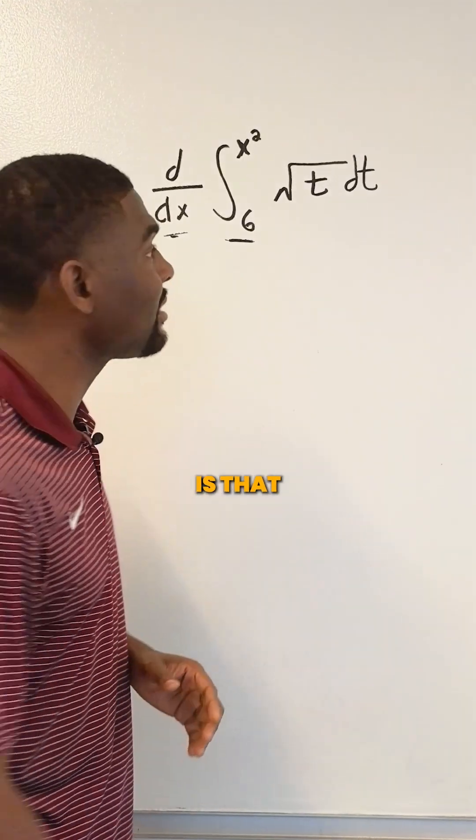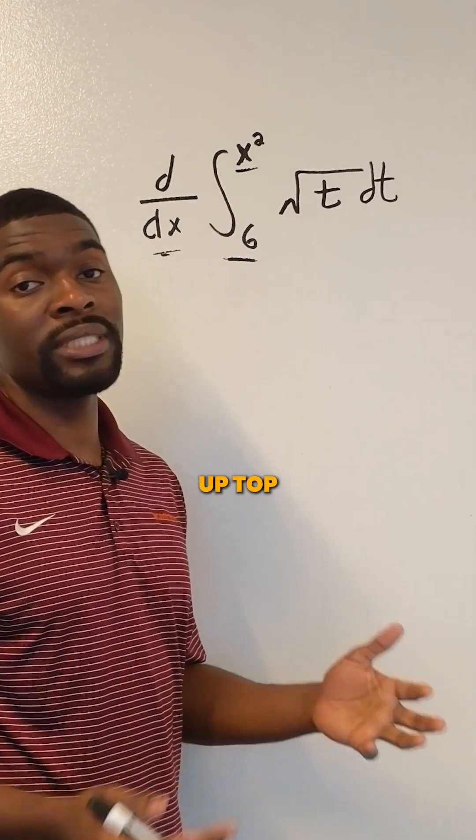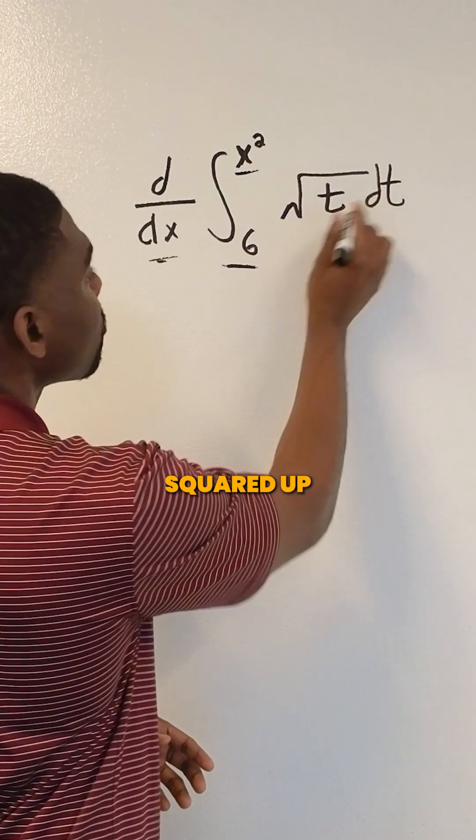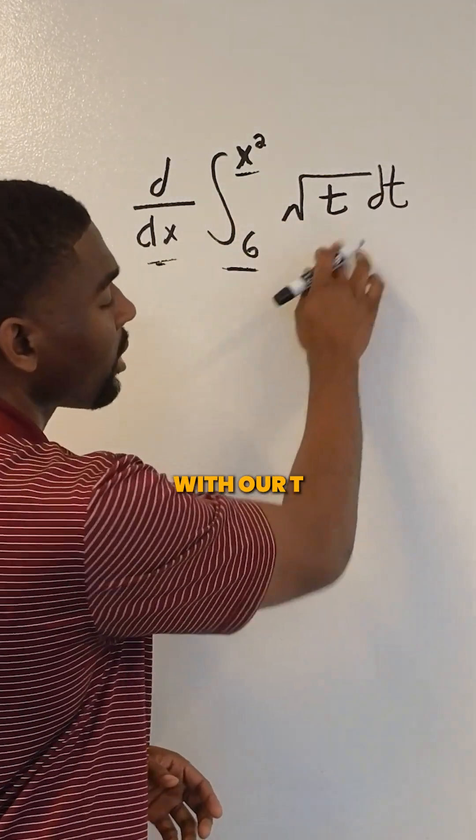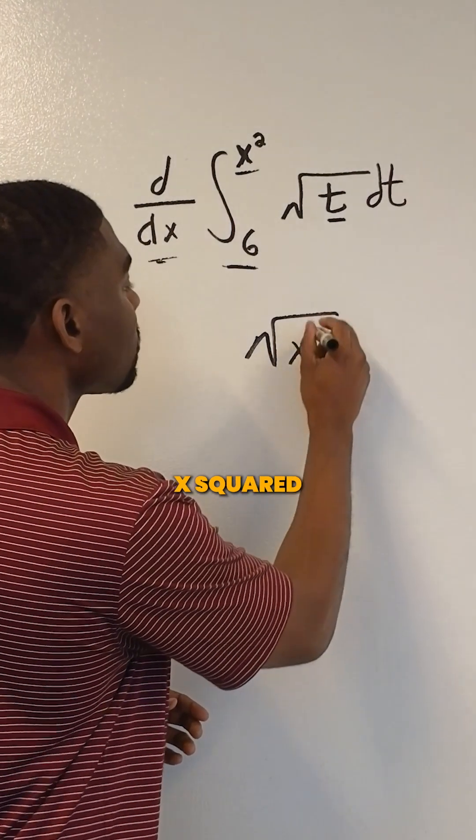All it is saying is that we can do a direct substitution of the variable up top. We're going to replace this x squared up top with our t. We're going to get the square root of x squared.